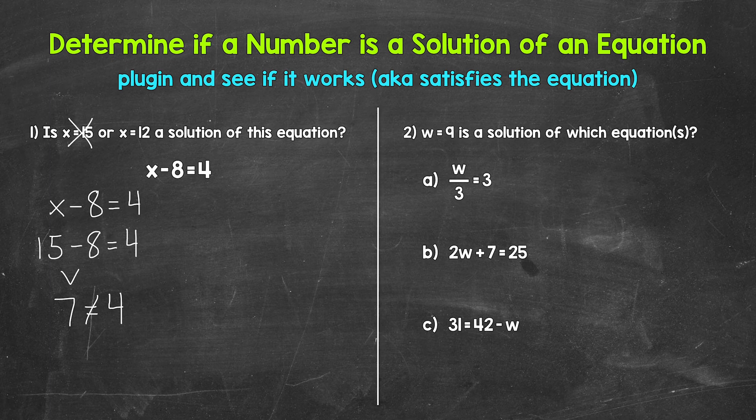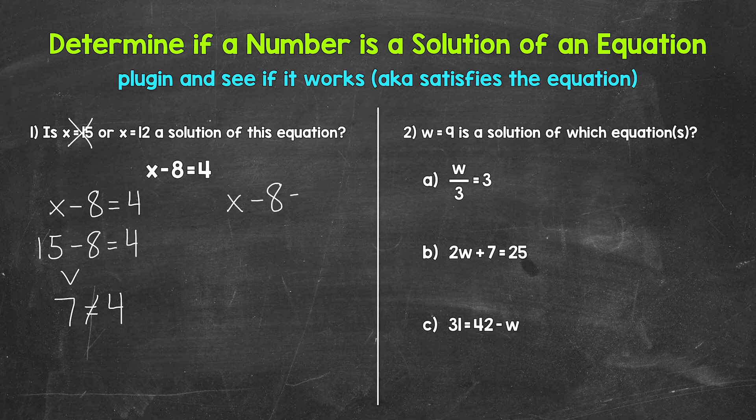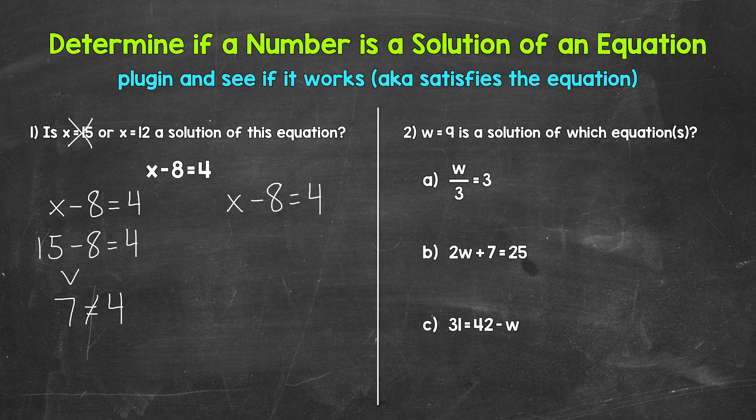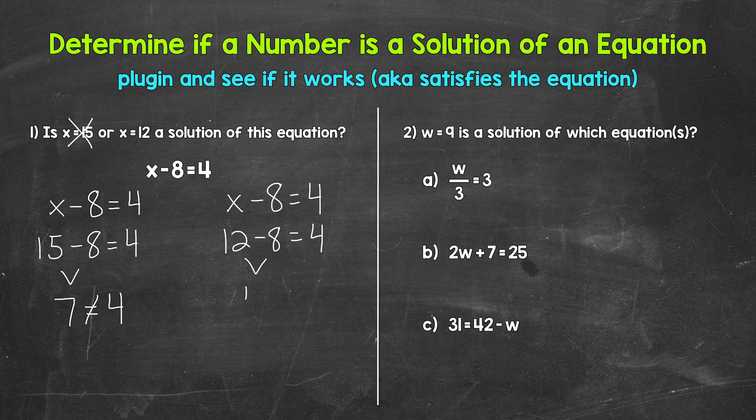Let's try 12. So let's start with our original equation, x minus eight equals four. Let's plug in 12 here. So 12 minus eight equals four. That is true. 12 minus eight is four. So that is a solution of this equation. x equals 12.